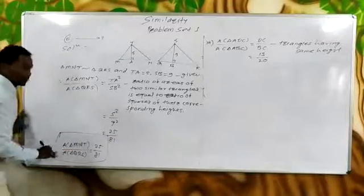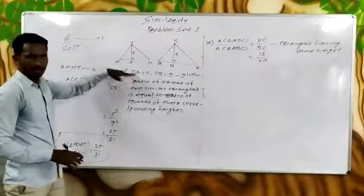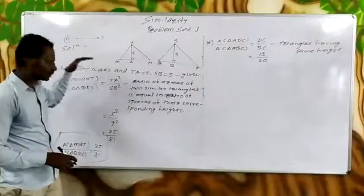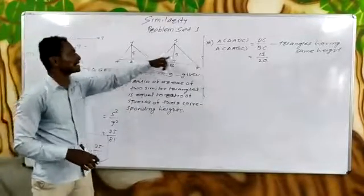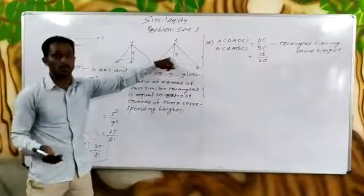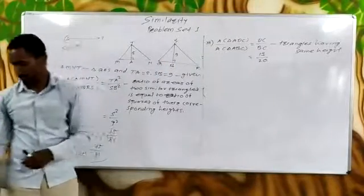Remember that if two triangles are similar, the ratio of their areas is equal to the square of the ratio of their corresponding heights. Okay, next.